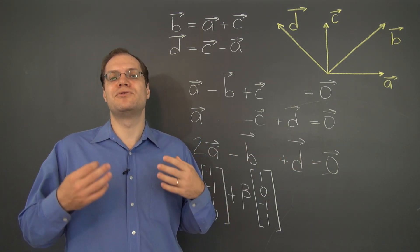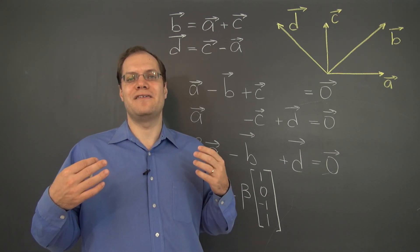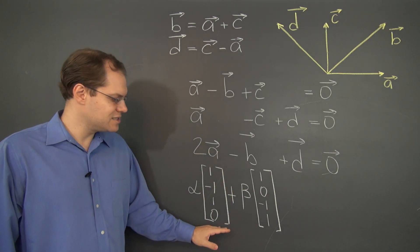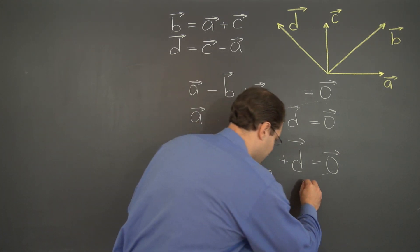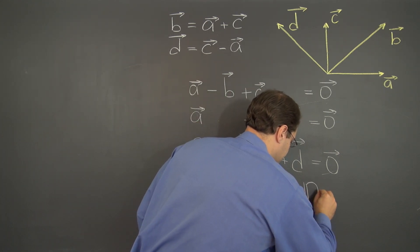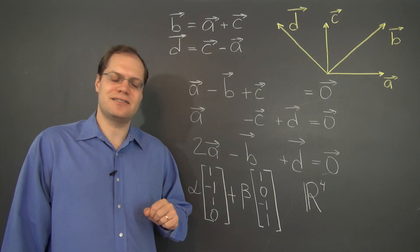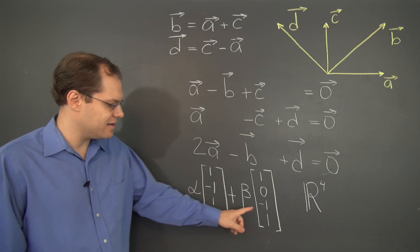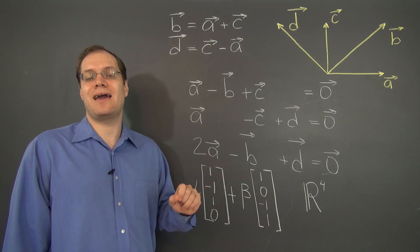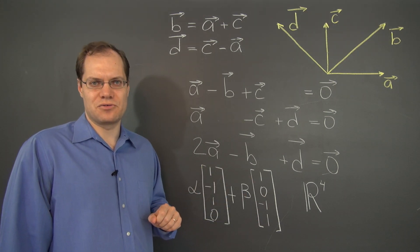They really, truly are vectors. And not only are they vectors, they're actually a subspace of R4. What subspace is it? Well, it's the span of these two vectors. A span is always a subspace in its own right.